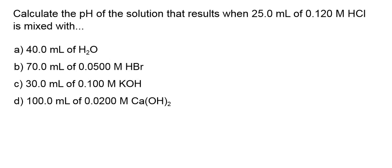Solving for pH in solutions dealing with acids and bases and neutralizations can be extremely complicated. This is a great example to show four different ways this can be calculated from the same starting point. Calculate the pH of a solution that results when 25 mL of 0.120 M HCl is mixed with the following options.